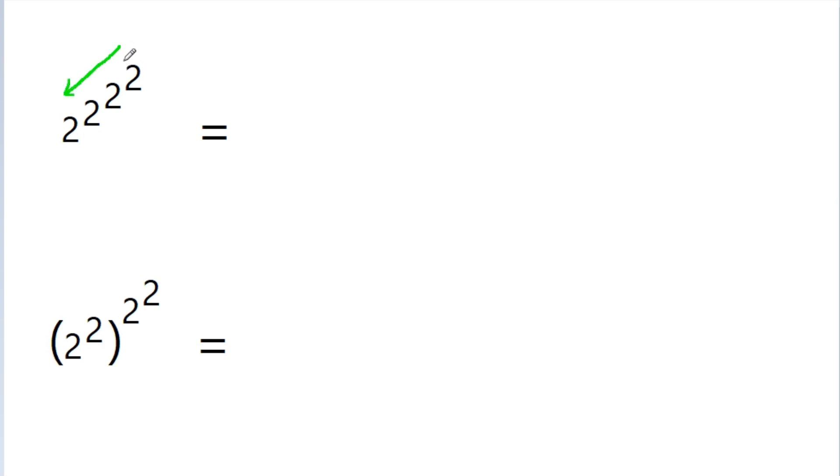Here we simplify 2 to the power 2 first. Then we get 2 to the power 2, and this 2 to the power 2 will be 4. Now again we simplify from top to bottom.